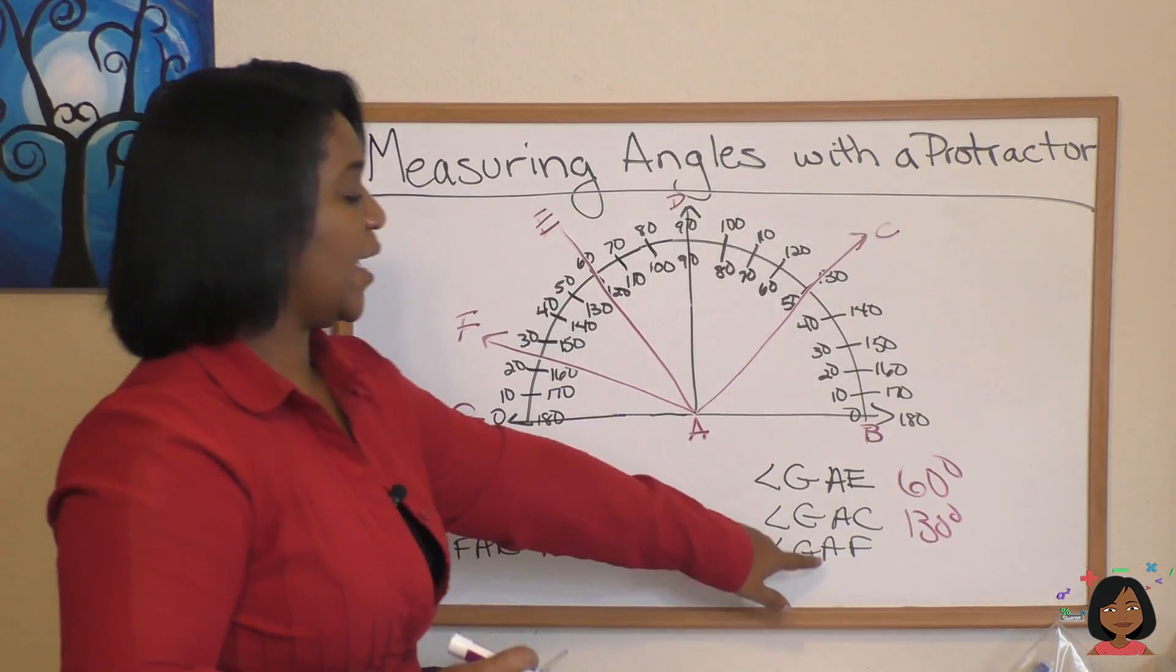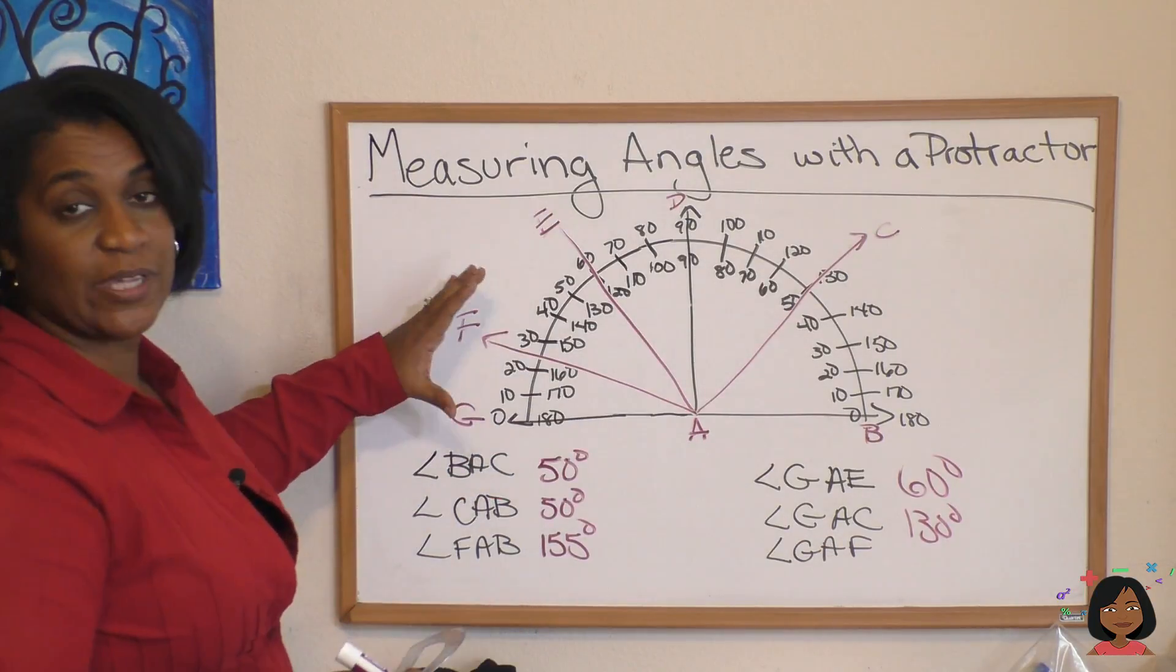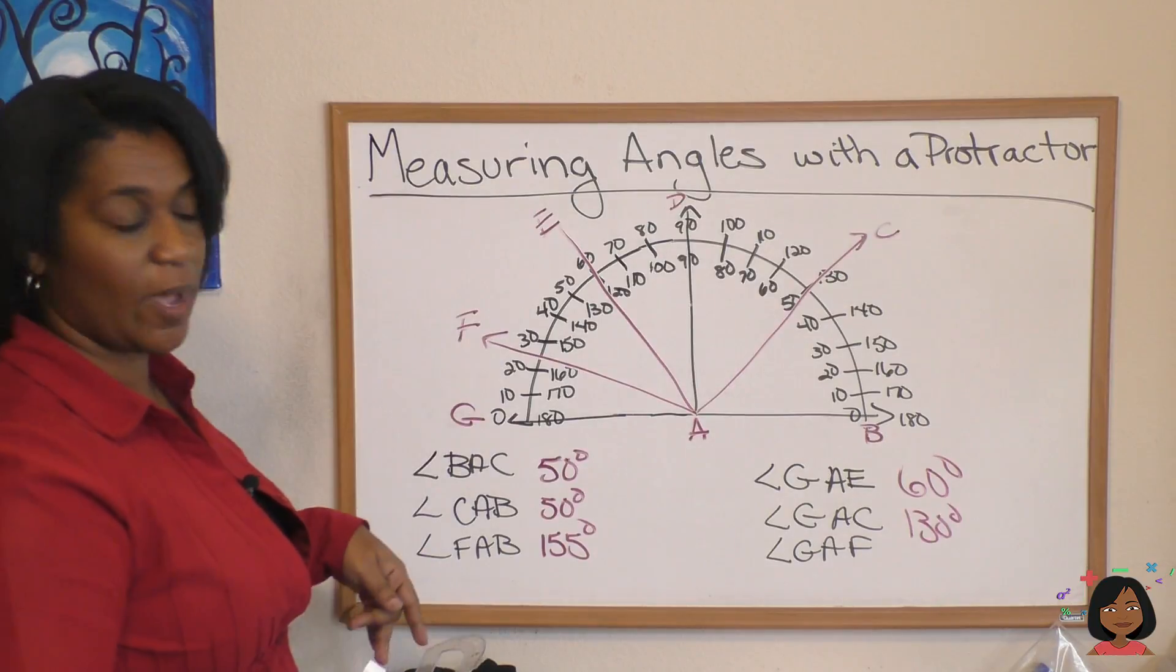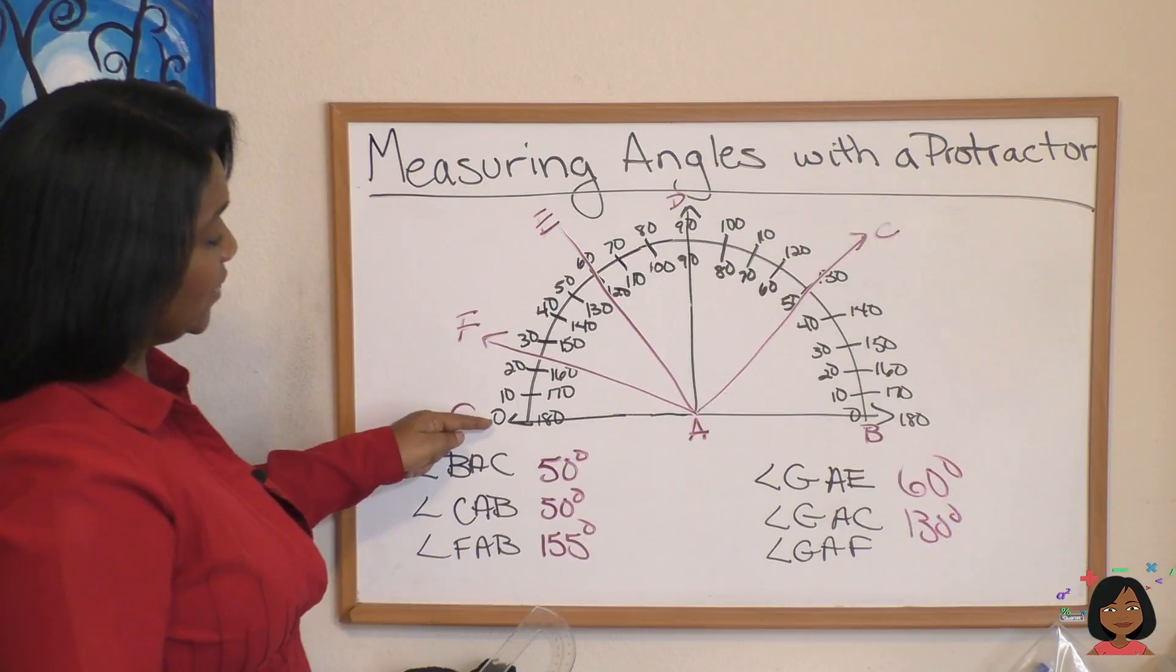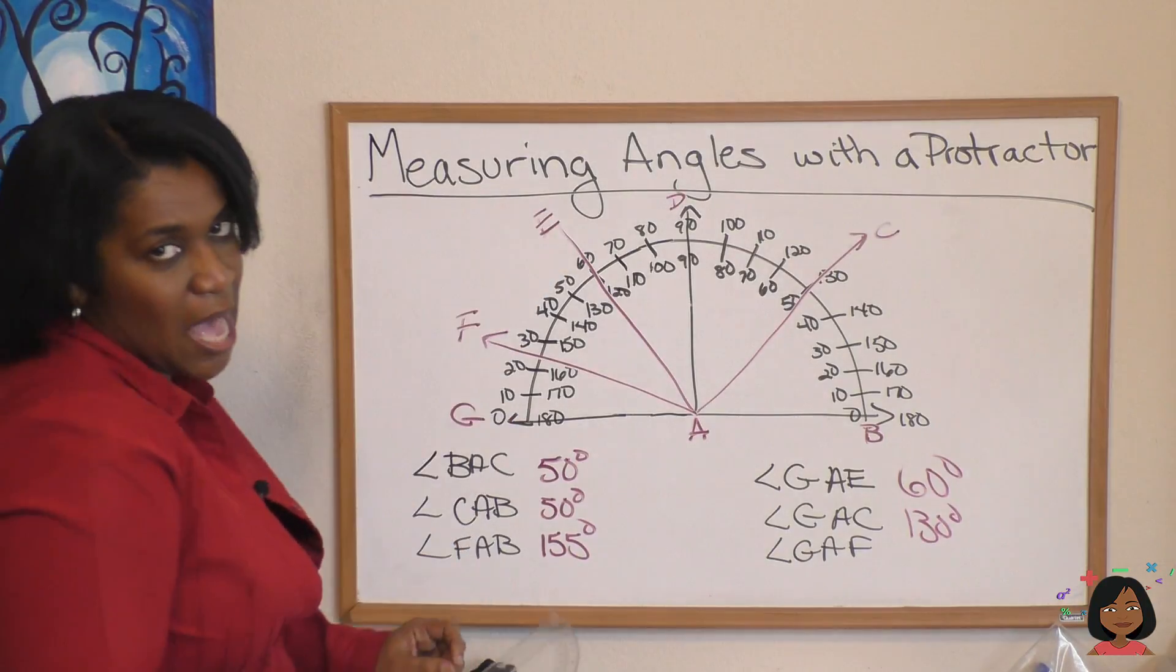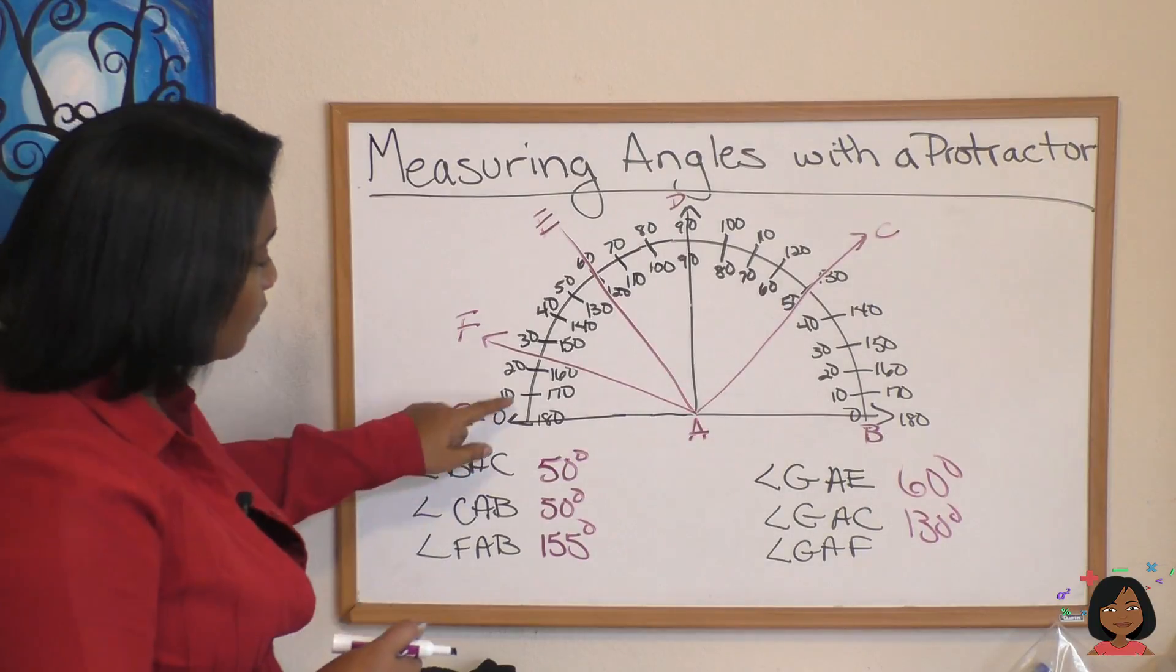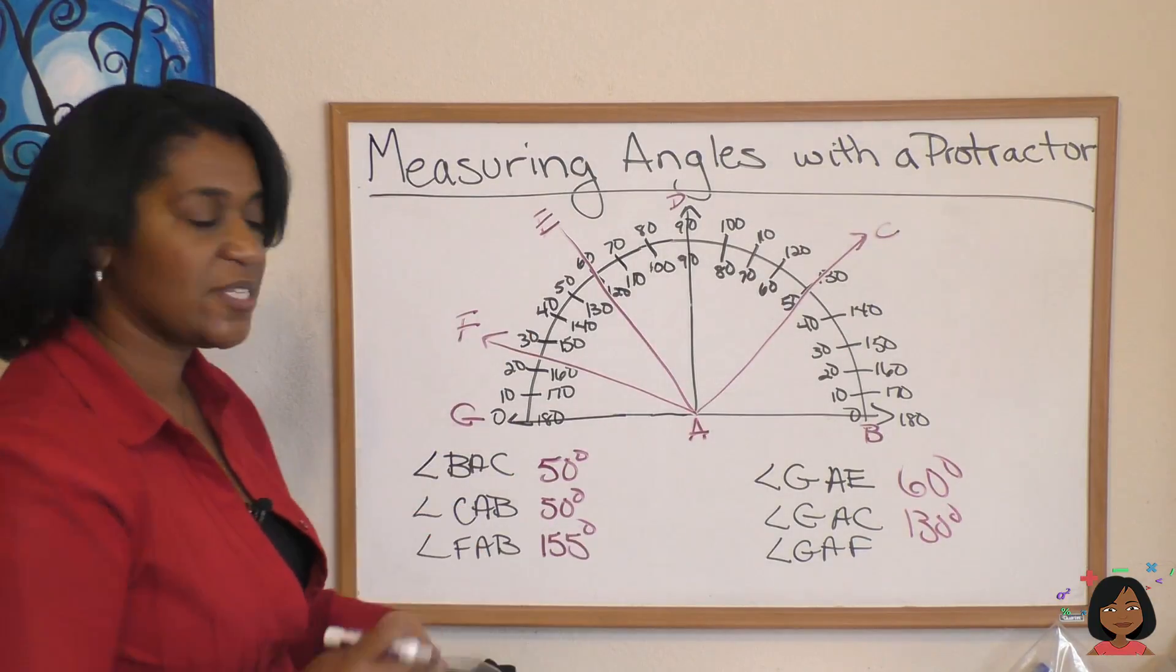What about GAF? Again, we can see it opens up this way, so we're using the outside and we can see that it's less than 90 degrees. It's this big, it's an acute angle. Since it falls between 20 and 30, we're going to say it's 25 degrees.